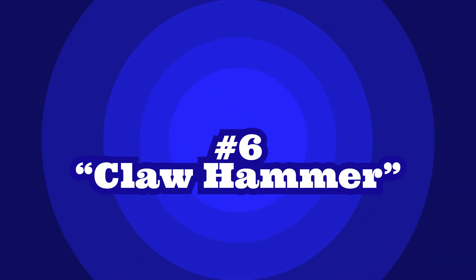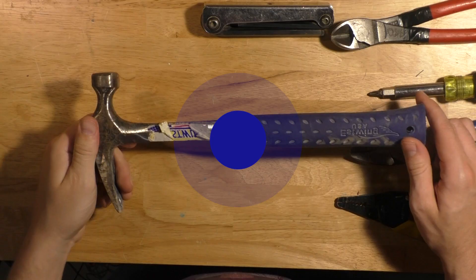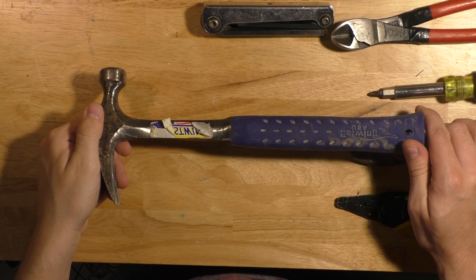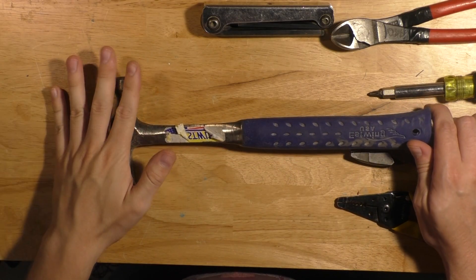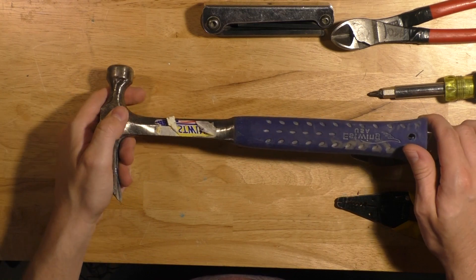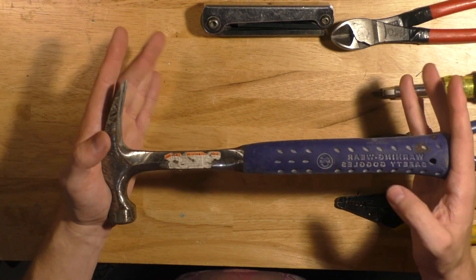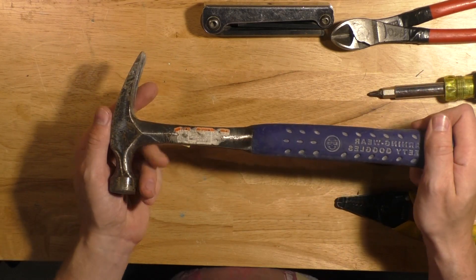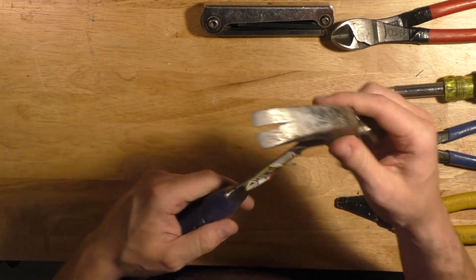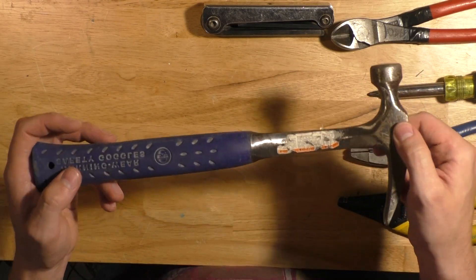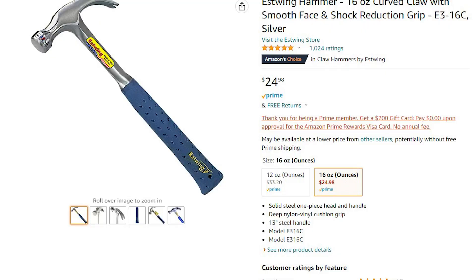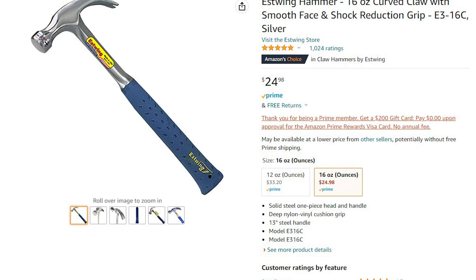Number six on the list is a claw hammer. Now commercial electricians typically don't carry a hammer on their tool belt because they work with steel studs primarily which requires an impact drill and metal screws to mount our equipment, but residential electricians will use a hammer all day long in some stages of construction. The hammer I am suggesting is the Estwing 16 ounce claw hammer which will cost you around $25.